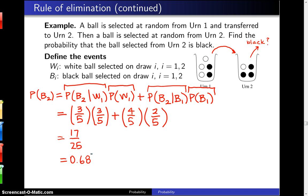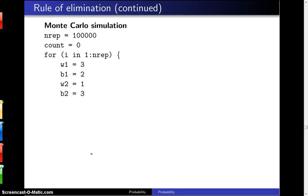Now, if for some reason you are nervous about this answer of 0.68, it is possible to run a Monte Carlo simulation to check it. And here's what the Monte Carlo simulation looks like. You start out by setting the variable nrep to the number of replications, and we will replicate this 100,000 times. We set a variable count to be zero. It's initialized to zero. It will eventually be the number of times that we pull a black ball out on that second draw from the second urn.